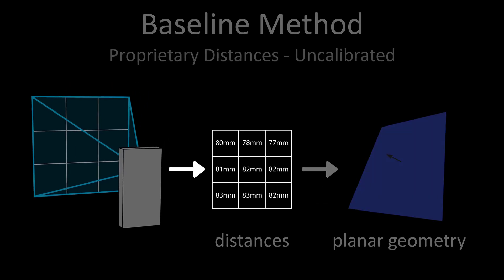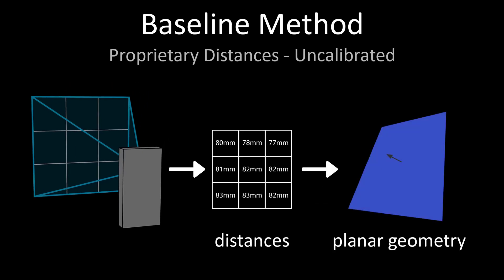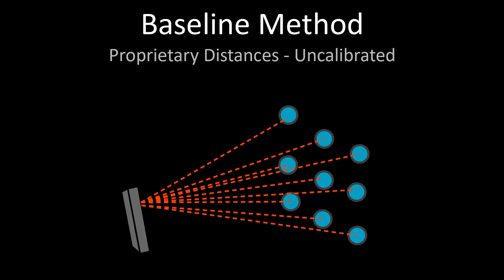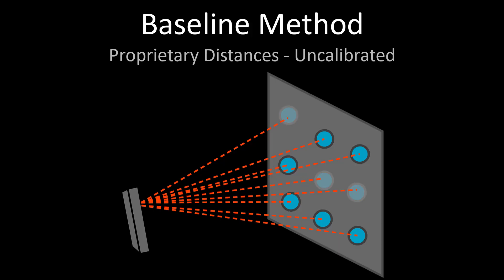We first devise and implement a baseline method for recovering planar geometry, which utilizes only proprietary distance estimates calculated on board the sensor. The basic idea of this method is to project outwards from the sensor by the detected distance, giving us a set of nine points to which we fit a plane.